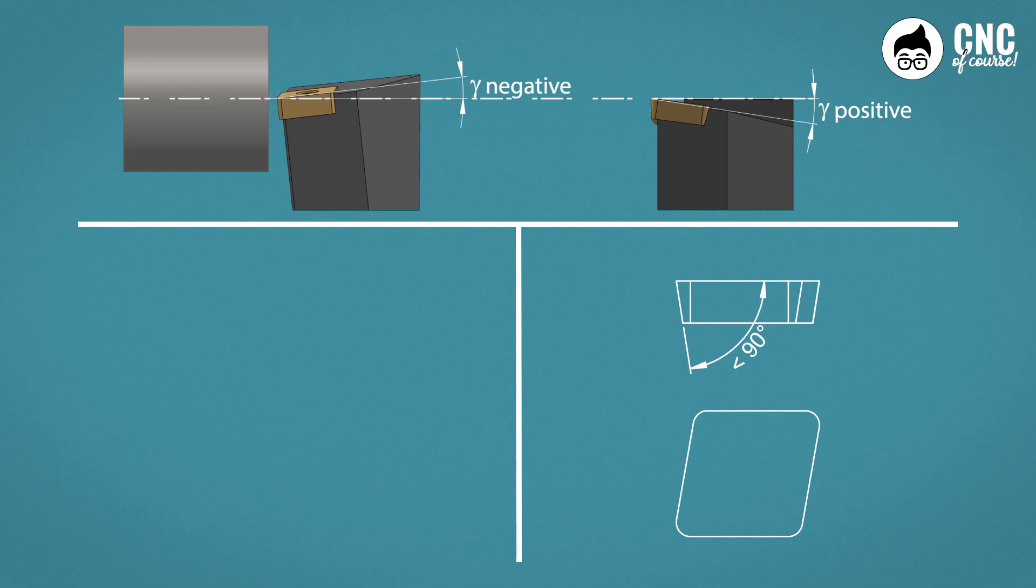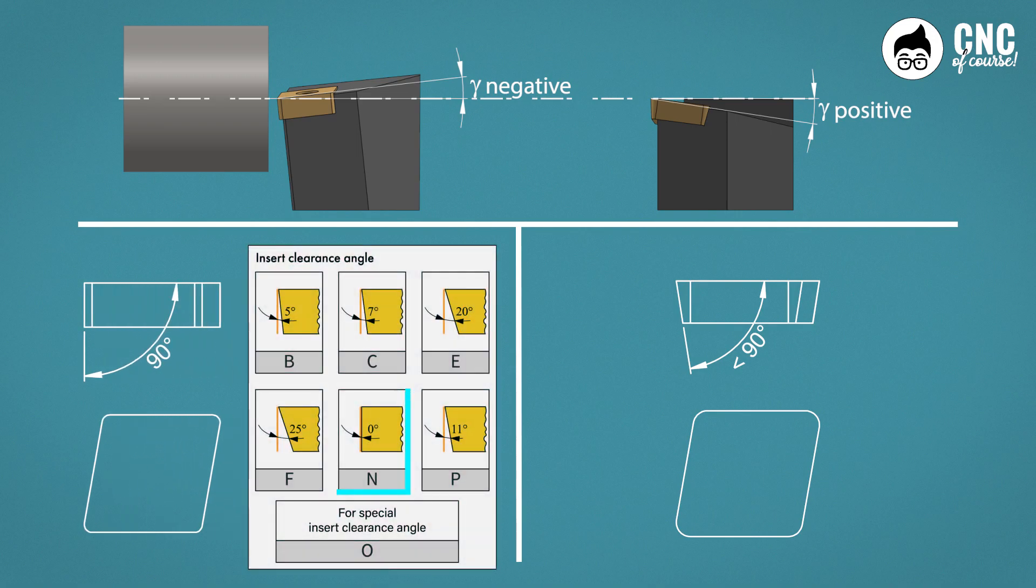we will have an insert that will have an angle between the face and the lower flank of 90 degrees. On the other hand, an insert mounted on a negative tool may well have a clearance angle of zero degrees, therefore the letter N will appear in the ISO letters. This allows an angle between face and flank of 90 degrees. Making the insert more robust, and therefore much more suitable for heavy machining, roughing, interrupted cuts, machining of high-strength steels.